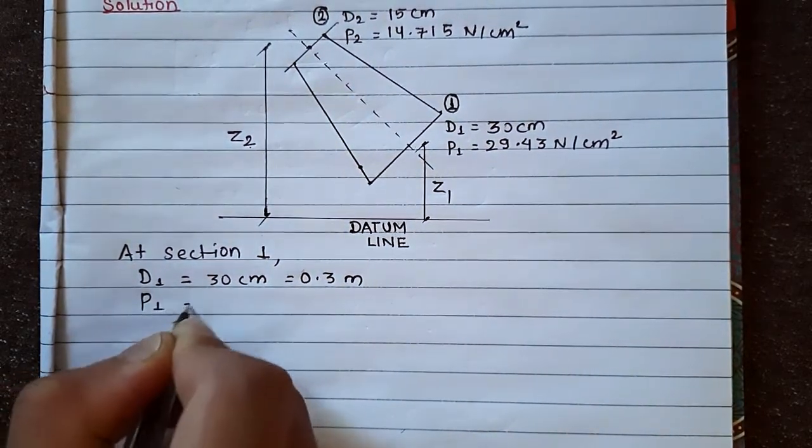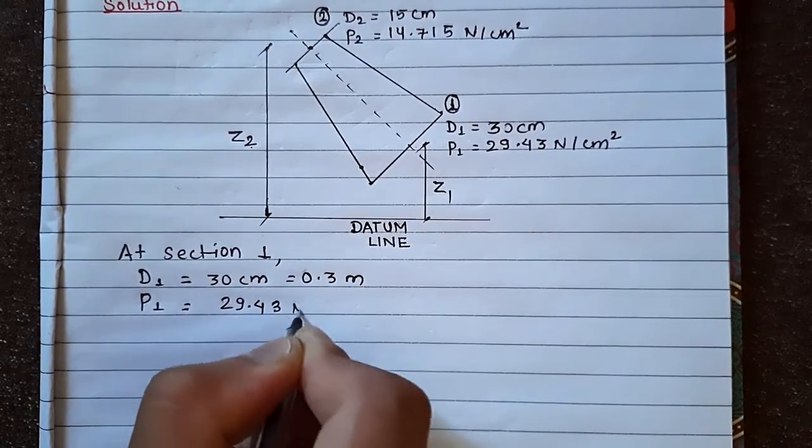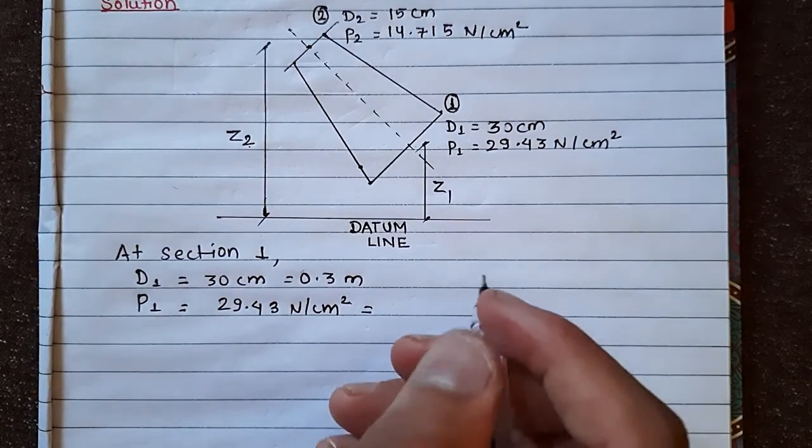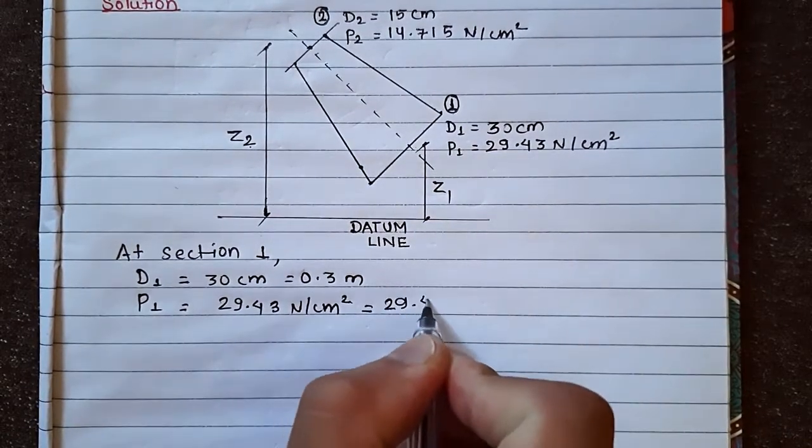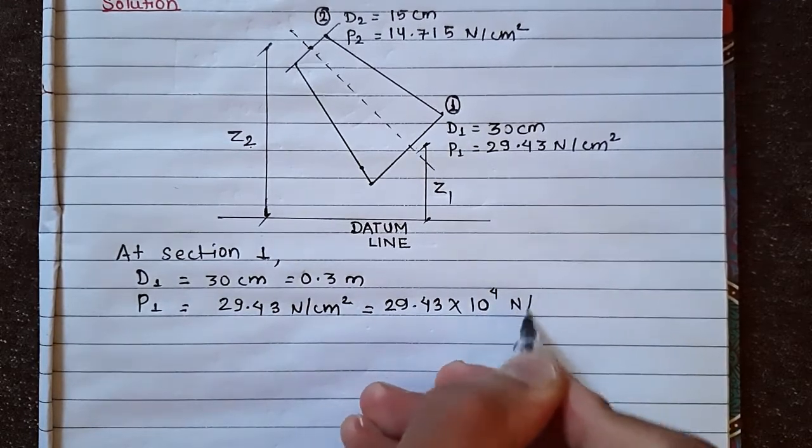pressure intensity 29.43 Newton per cm², 29.43 into 10 to the power of 4 Newton per meter square.